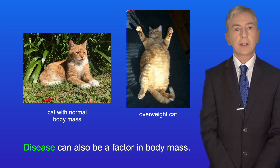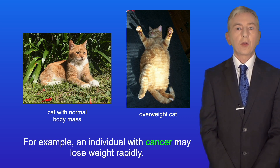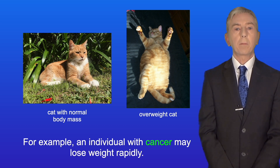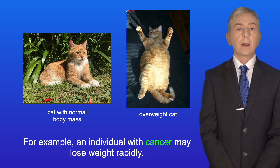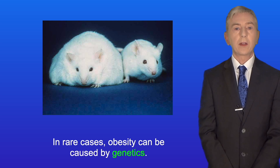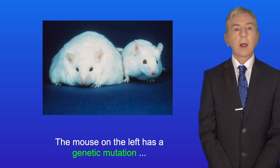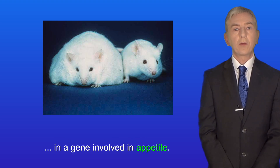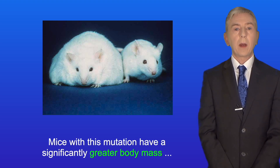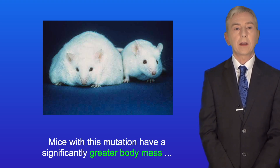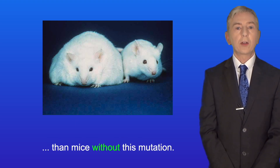Disease can also be a factor in body mass. For example, an individual with cancer may lose weight rapidly. Now in rare cases, obesity can be caused by genetics. The mouse on the left has a genetic mutation in a gene involved in appetite. Mice with this mutation have a significantly greater body mass than mice without this mutation.